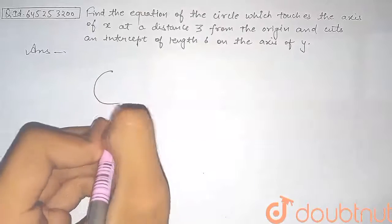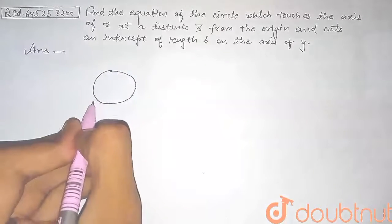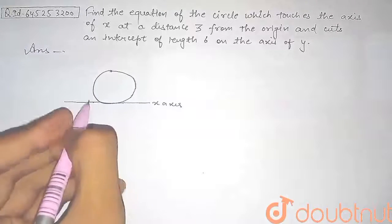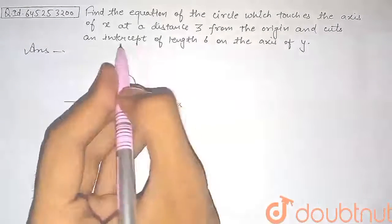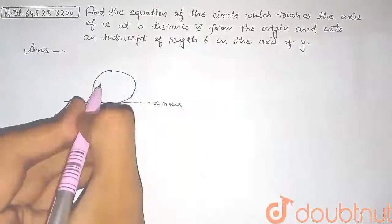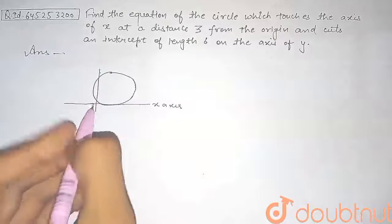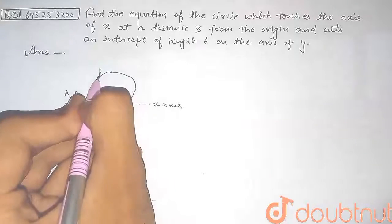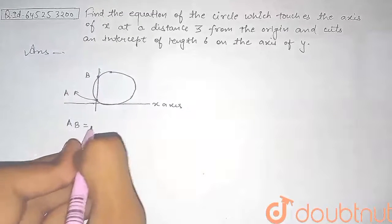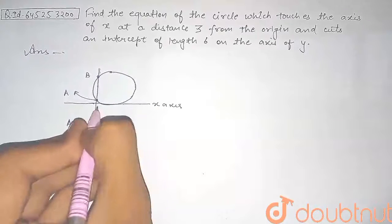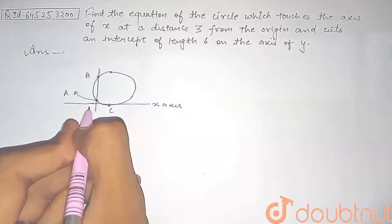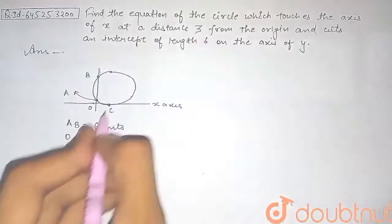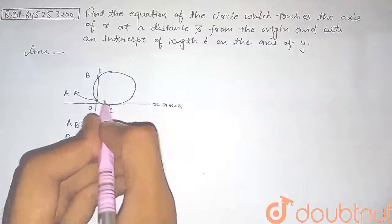If we draw the circle, this circle is touching the x-axis. We extend to show the x-axis. This circle is cutting an intercept of length 6 on the y-axis, so we draw our y-axis. The points of intersection with the y-axis are named A and B, so AB is given as 6 units. The point of tangency on the x-axis is C, and since the origin is O, the length OC is given as 3 units.